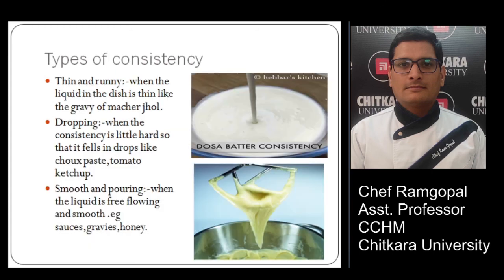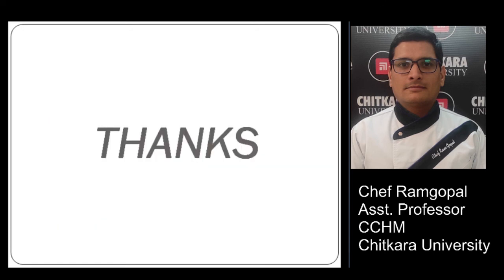There are different types of consistencies. Thin and runny: when the liquid in the dish is thin, like fish gravy. Dropping: when the consistency is a little thicker and falls in drops, like shoe paste or tomato ketchup. Smooth and pouring: when the liquid is free-flowing and smooth, like sauces, gravies, and honey. That's all about textures and consistencies. Thank you very much — have a nice day, stay safe and stay healthy.